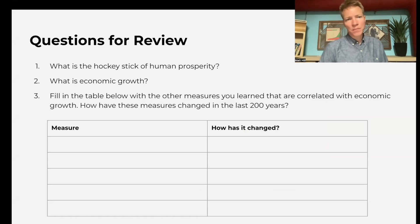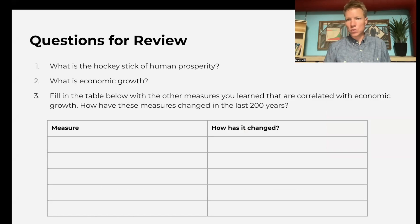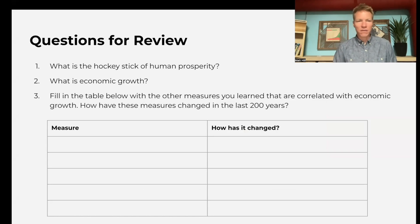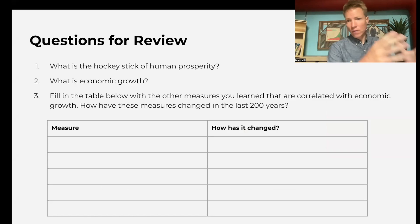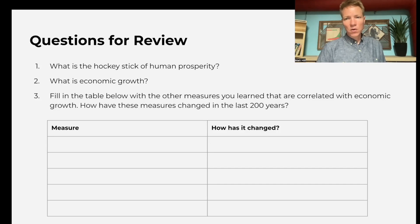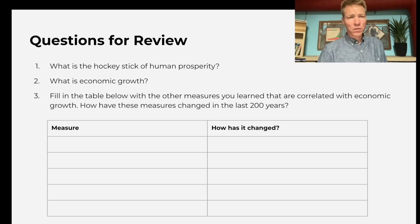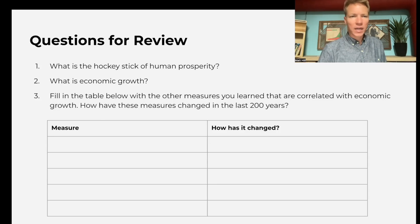Some questions for review: What is the hockey stick of human prosperity? That is this takeoff in economic growth that corresponds to decreased child mortality, increased life expectancy, and increased life satisfaction. Ask students to define economic growth — it is the increase in the productive capacity of the world, or whatever we're measuring with that economic growth, whether it be a country or the world. And fill in the table below with some measures that are correlated with economic growth. The specific answers are in the student answer sheet if you sign up for the unit plan.